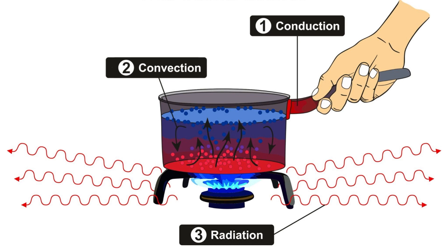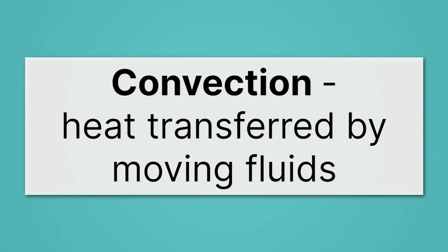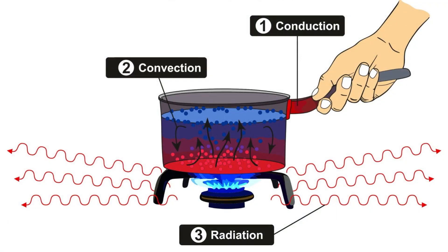Secondly, we have convection. Notice within that pot, we have all of those arrows showing the hot stuff on the bottom moving up to the cooler stuff up top. So if you have a substance at multiple temperatures and the molecules can flow through it, then we can heat things by convection. That's just when heat is transferred by moving fluids. Okay, lastly, we have radiation. Those arrows coming out from the flames in the hot pot represent light, which we also can call radiation.